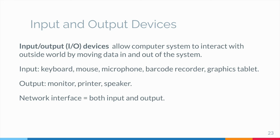What counts as an I/O device depends on context. To a user, an I/O device is something outside of the computer case. To a programmer, anything outside of the processor and main memory is an I/O device. To an engineer working on the design of a processor, everything outside of the processor is an I/O device.